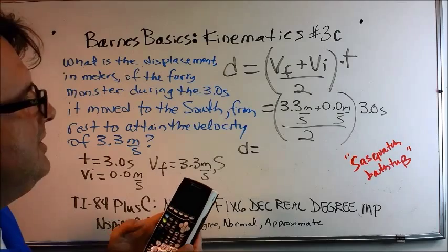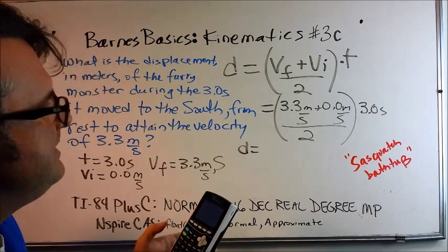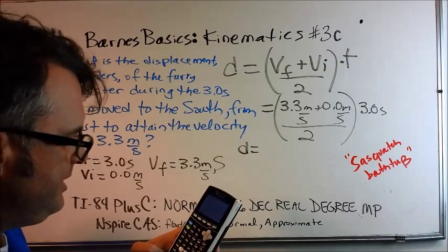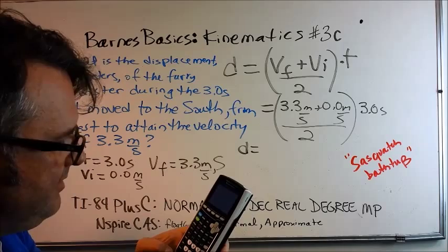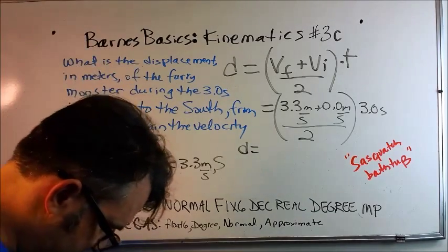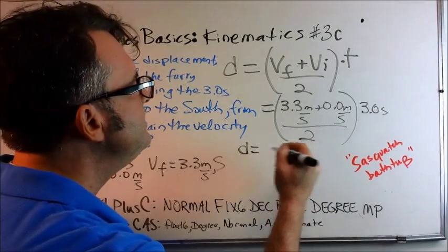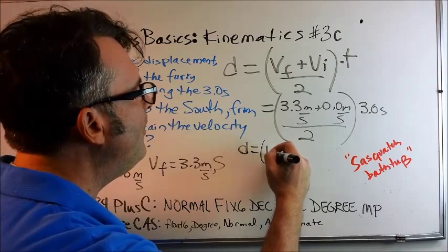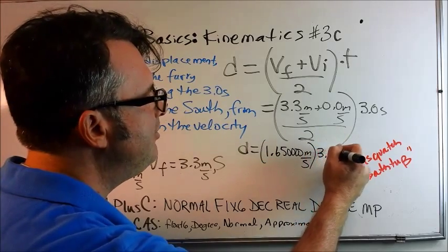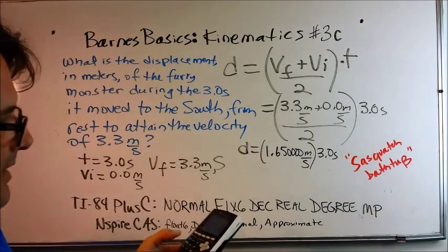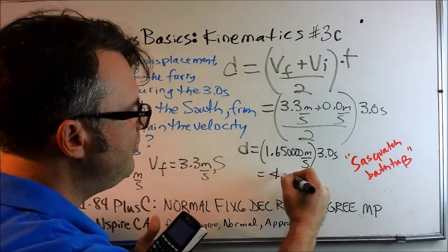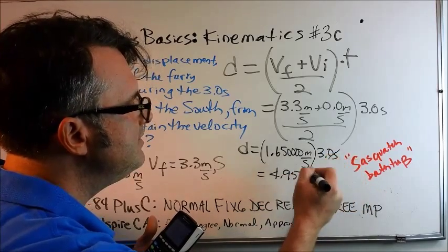With the TI-84+, let's start over. 3.3 plus 0, enter, divided by 2, enter, and I get 1.65, followed by 4 zeros. So I'll get 1.65 meters per second, multiplied by 3.0 seconds. Multiplied by 3.0, hit enter, and I get D is equal to 4.95 seconds canceled, and I'm talking about a displacement in meters.